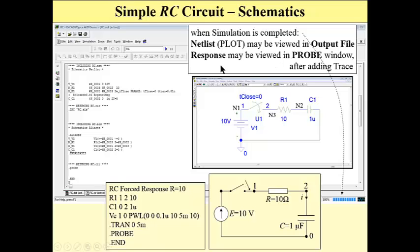In this output file, we have a netlist. Next, we may view this output file, this is a part of output file, netlist and response can be viewed in probe window after adding trace.